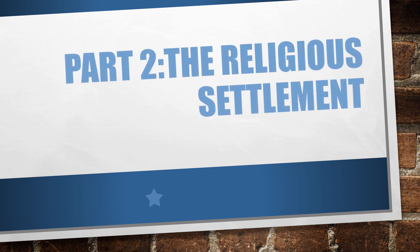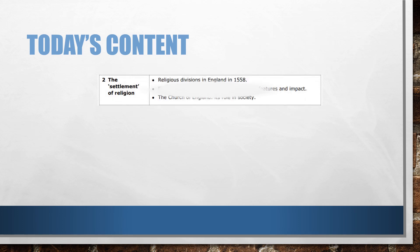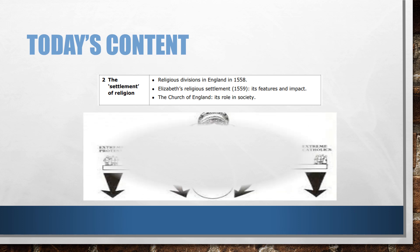This video is going to focus on part 2 which is the religious settlement. Today's content is going to cover the religious divisions in England in 1558, Elizabeth's religious settlement in 1559 regarding its features and its impact, and it's also going to look at the role of the Church of England in society.